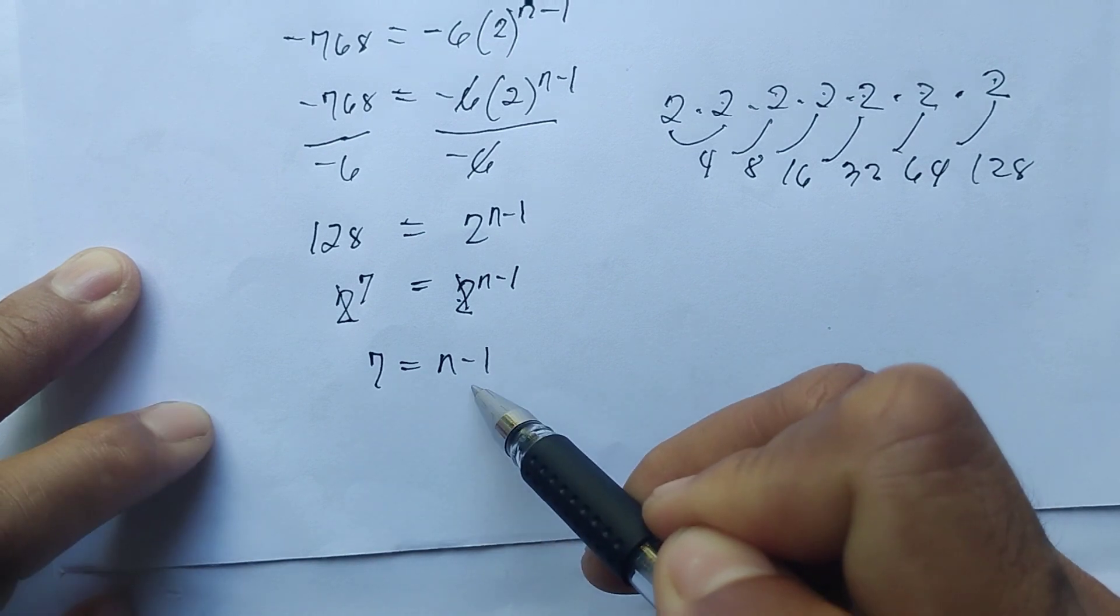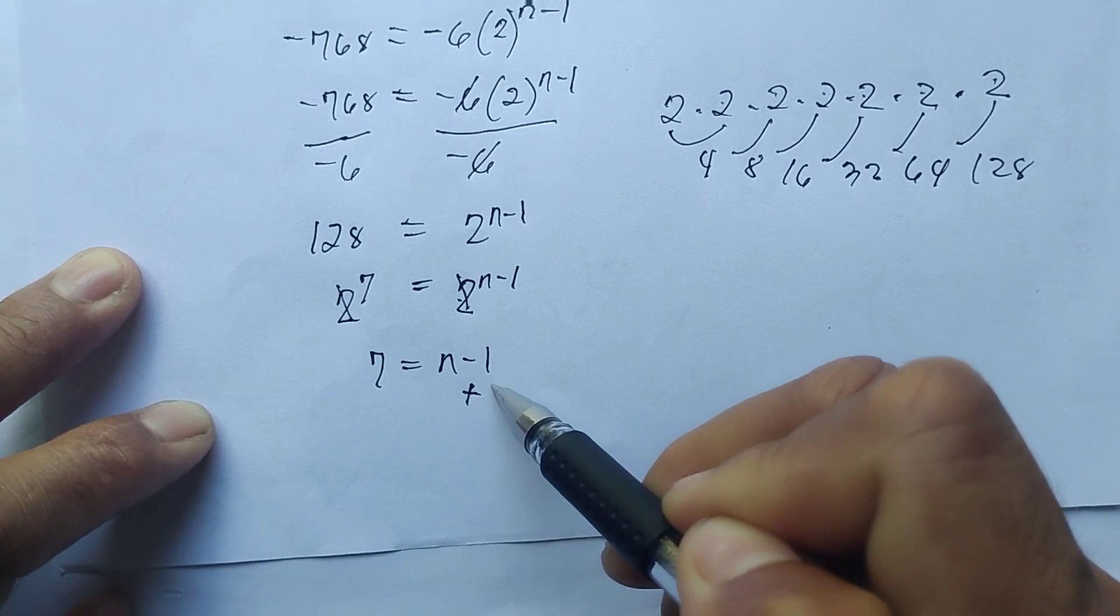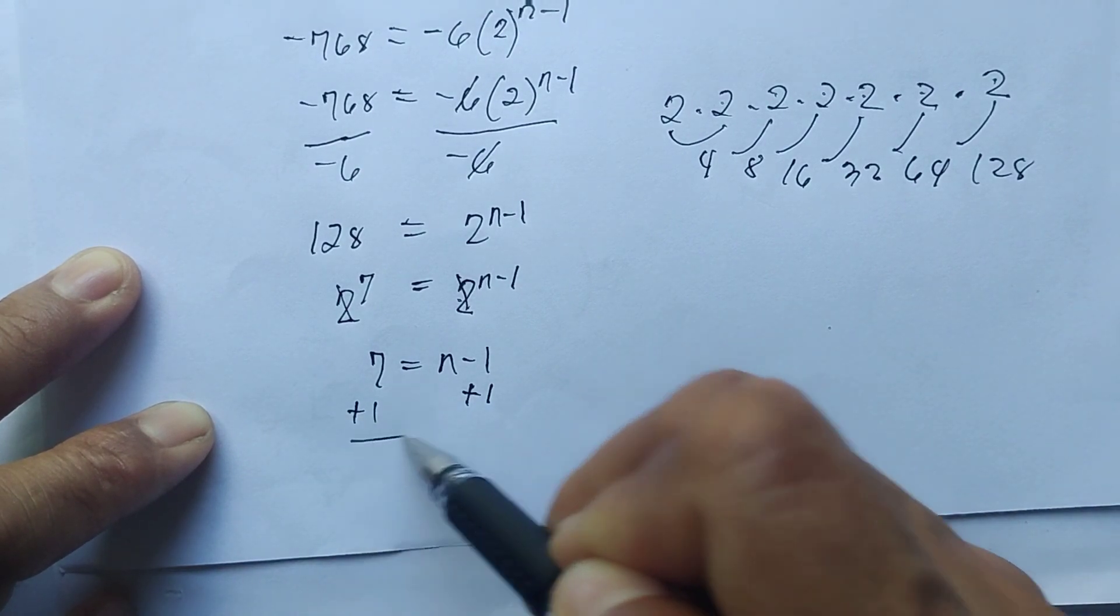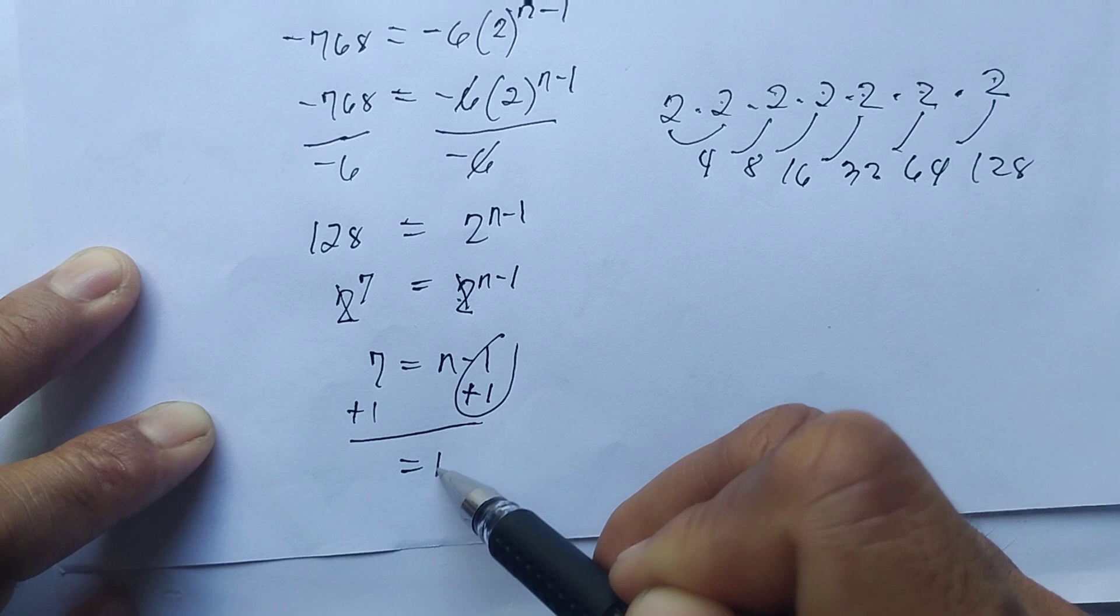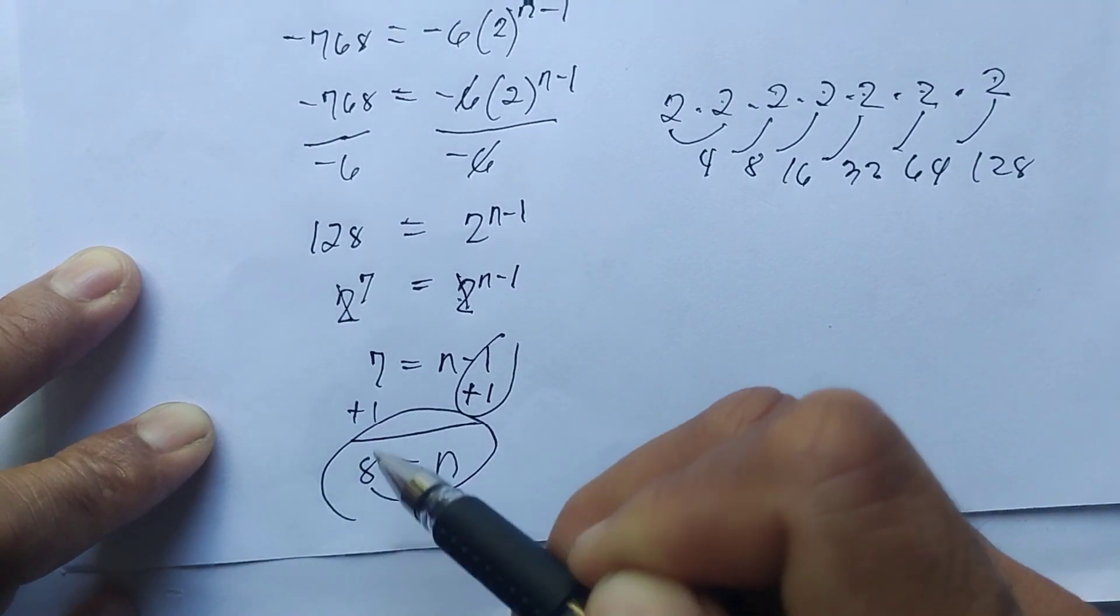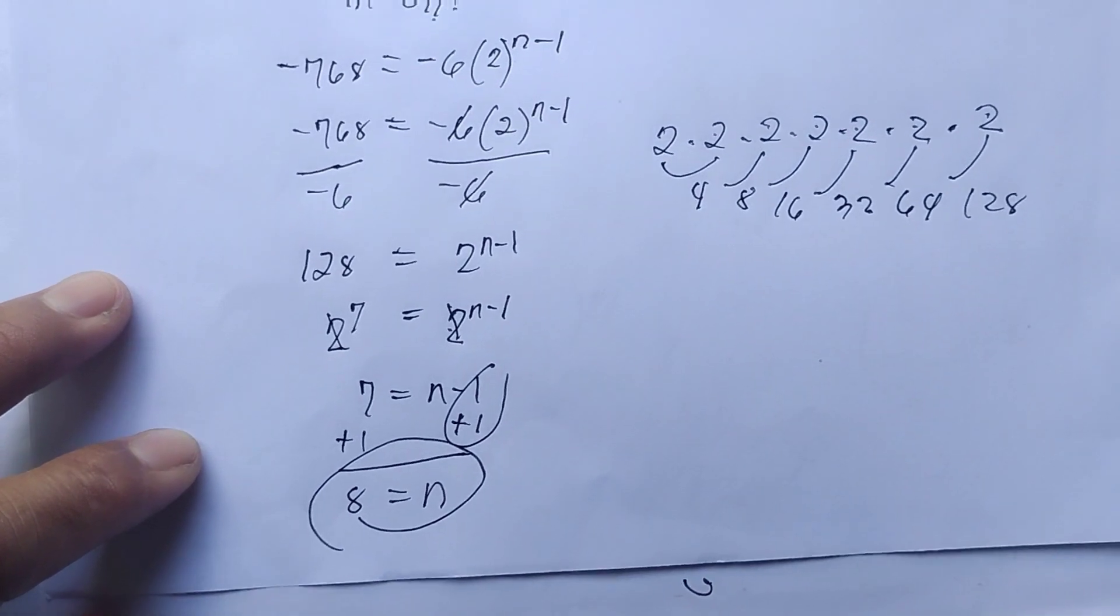After that, combine like terms. We need to transpose -1 to the left side by adding the opposite sign of -1, that is +1, on the other side. We'll cancel out this, bring down n. 7 plus 1 we have 8. Which means there are 8 terms in this sequence.